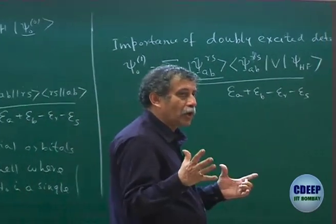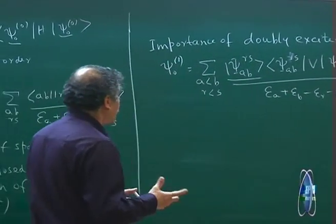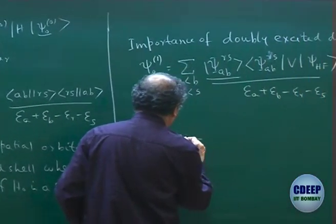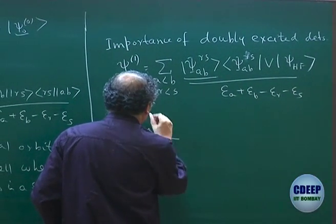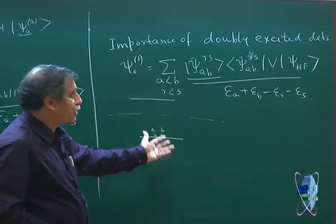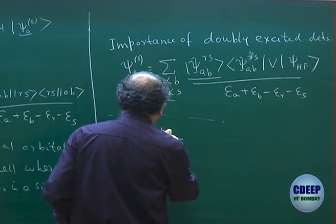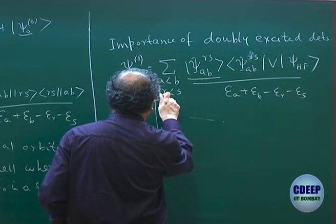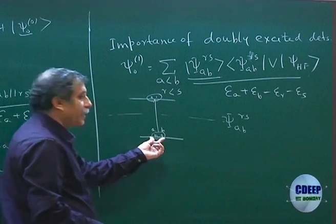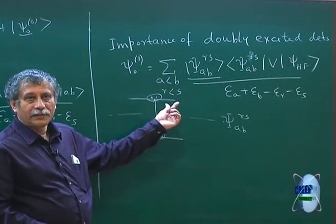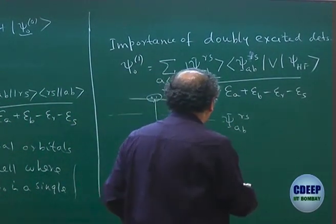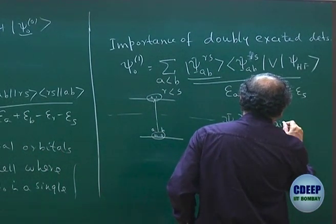This is also the content of Sinanoglu's review — essentially known today as pair correlation theory. The essential idea is that correlation means two electrons in spin orbitals A,B get excited together to some R,S, forming what is called the doubly excited determinant. In a graphical manner, two pairs are getting excited together. Correlation essentially means they are getting excited — this is why in general it is called a pair correlation theory.